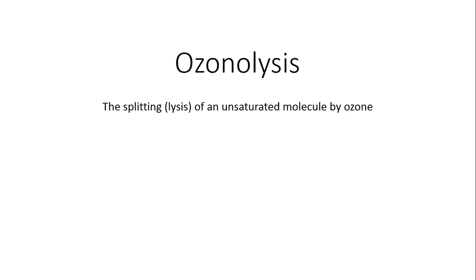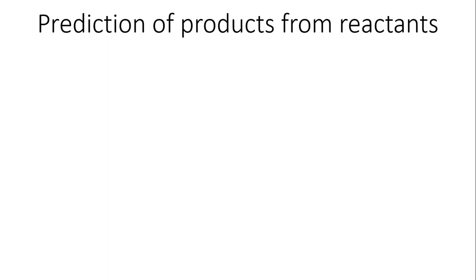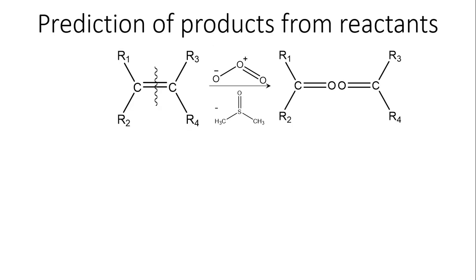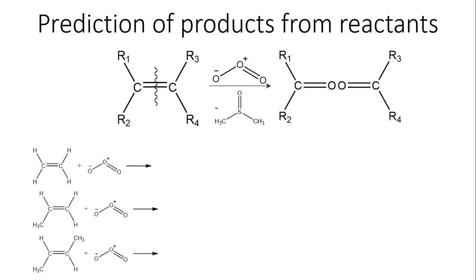A general outlook of this reaction looks a bit like this. Let's start our discussion with the prediction of the products of the reaction. Here I have shown an alkene. The double bond of this alkene will break in the presence of an ozone molecule and it will generate two carbonyl compounds. These two carbonyl compounds have two oxygens from the ozone, and the third oxygen of ozone will be extracted from dimethyl sulfide in the form of dimethyl sulfoxide. Let's see some other examples of this reaction and try to predict the products, which are shown here.